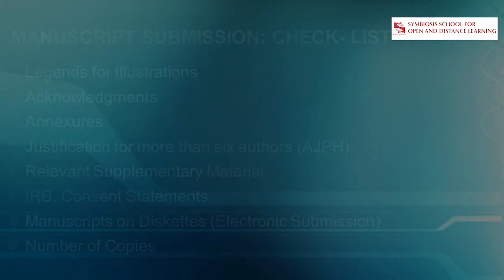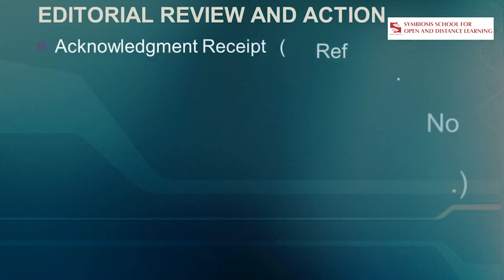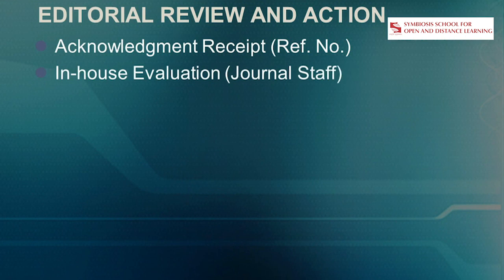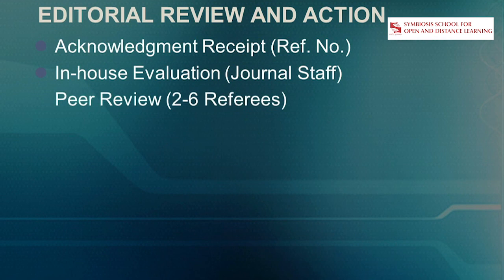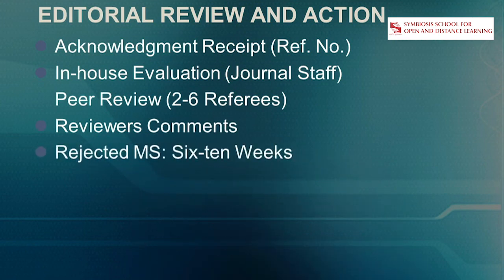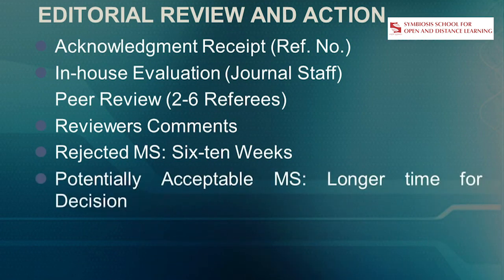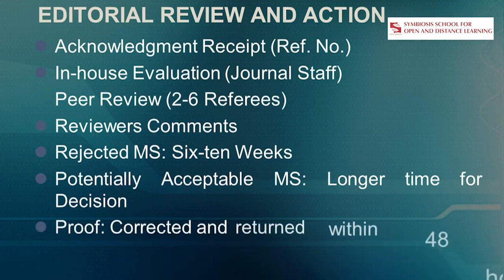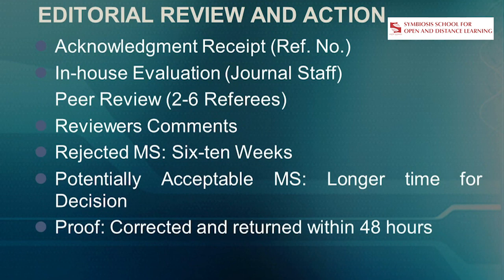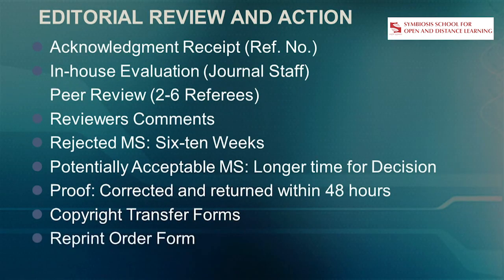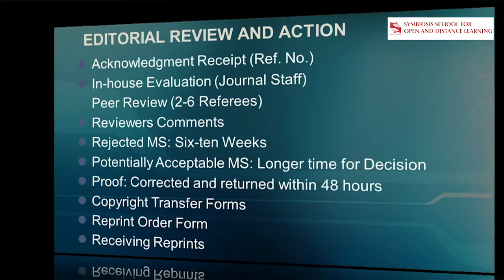After submission, you will receive an acknowledgement receipt, followed by in-house evaluation by journal staff. If suitable, the article is sent for peer review to two to six referees. Rejected manuscripts are usually communicated within six to ten weeks; potentially acceptable manuscripts may take longer. You need to correct proofs and return them within 48 hours. Copyright transfer forms are to be signed when manuscript proofs are finalized, and you receive reprints in digital format.